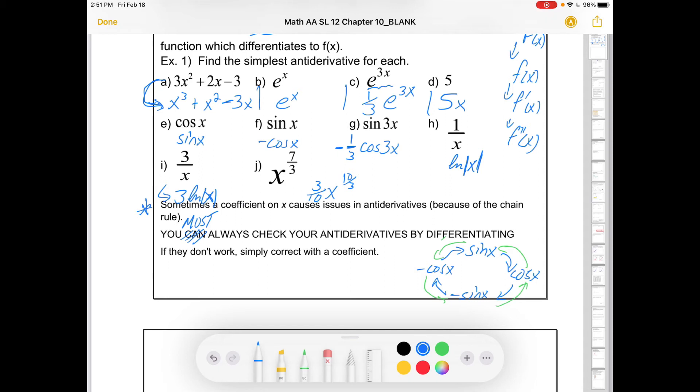If, when you check, they don't work, chances are it's just too big or too small by some factor, and you can correct that with a coefficient. So there's an intuitive look at how we would do some of these. Let's get some rules.